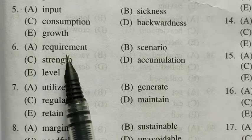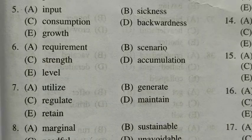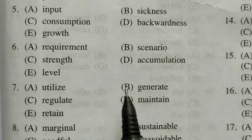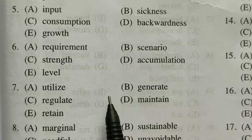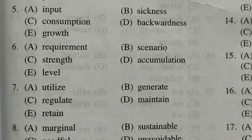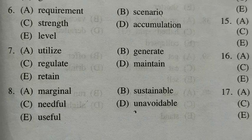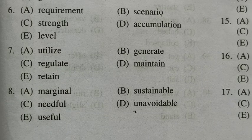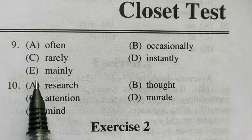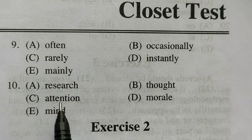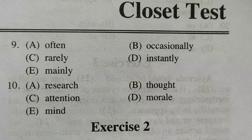The answer to question number 6 is A — requirement. The energy requirement has increased manifold. The answer to number 7 is — generate. These developments also generate a huge quantity. The answer to number 8 is D — unavoidable. Undesirable but unavoidable waste, which are regularly thrown into rivers, ponds, etc. The answer to number 9 is — mainly. Waste products from thermal power plants, mainly fly ash. The answer to number 10 is — attention. Have drawn the attention of scientists and academicians.